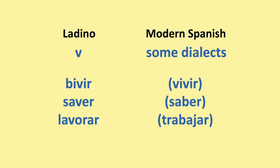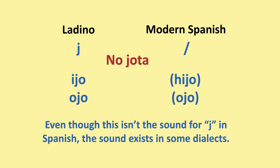There's no J — the H sound — in Ladino. So whenever you have a J, it's pronounced like the S in 'Asia', 'pleasure', or 'measure'. For example, 'hijo' instead of 'hijo', 'ojo' instead of 'ojo'.